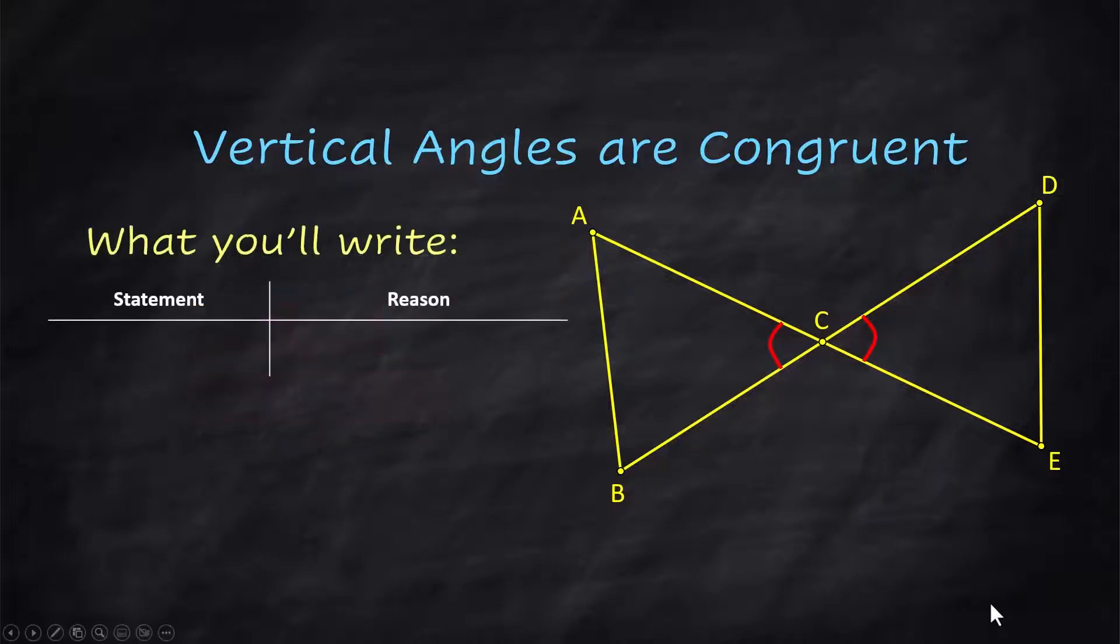And how you would use this in a proof is the statement would be angle ACB is congruent to angle DCE. And the reason is that vertical angles are congruent.